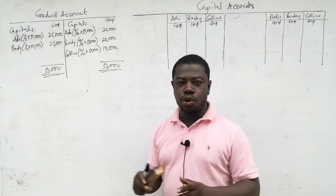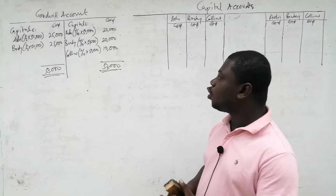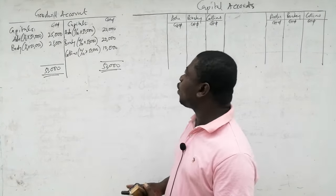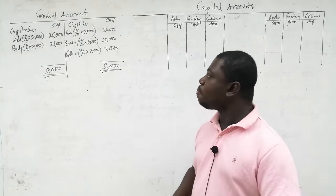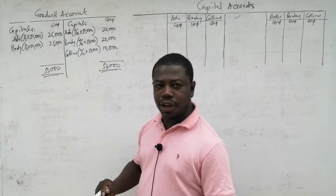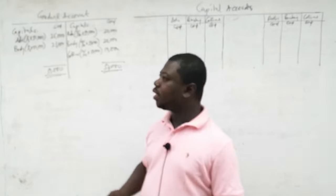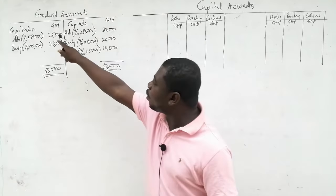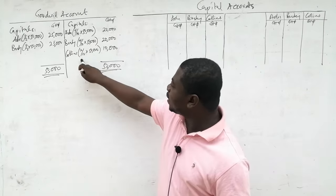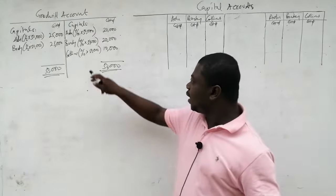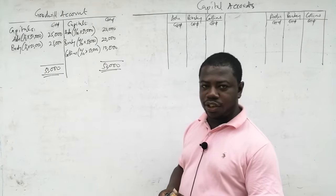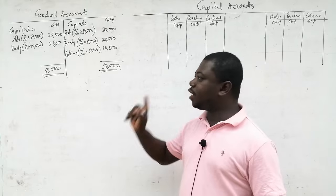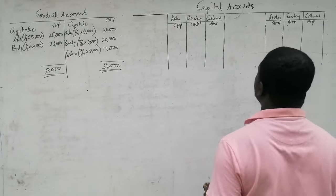Because there is no balance carried down, Goodwill will not appear anywhere — but it has an effect. When we go to the capital accounts, we credit the debit-side entries and debit the credit-side entries. When a capital account is debited, it means you are losing. Edu gains 25,000 from Goodwill but loses 20,000. Boateng gains 25,000 but loses 20,000. There is a net gain of 5,000 each for both of them. Collins loses 10,000 without gaining anything — that is the price he pays for the Goodwill he is coming to enjoy that he did not labour for.